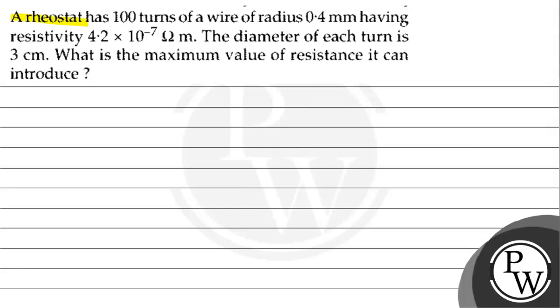The question says that a rheostat has 100 turns of a wire of radius 0.4 millimeter having resistivity 4.2 × 10^-7 ohm meter. The diameter of each turn is 3 centimeter. What is the maximum value of resistance it can introduce?